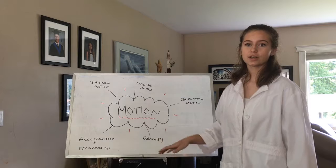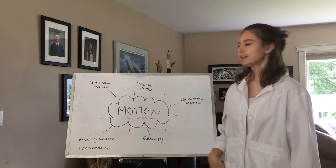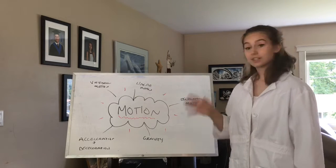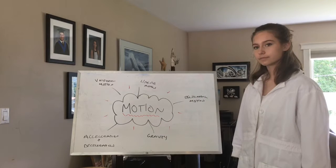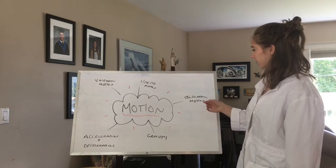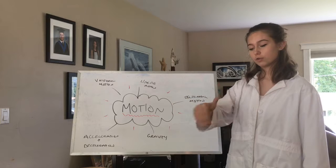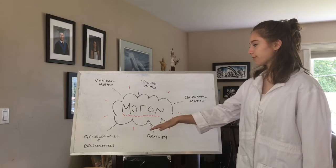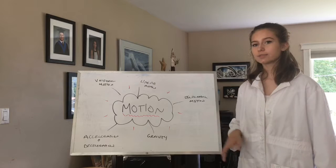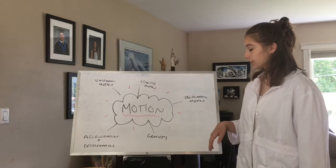There's uniform motion, which is constant direction, constant speed. Linear motion, which is constant direction. And oscillating motion, which is a motion which goes back and forth. Now we took a look at acceleration and deceleration, how that affects motion, and gravity as well.